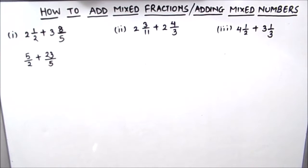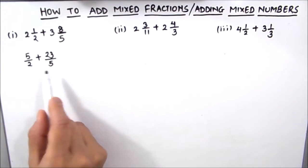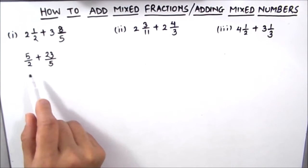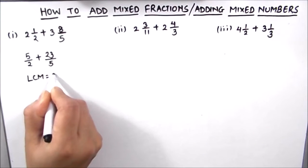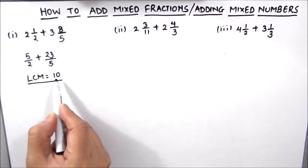We can directly add these two fractions by making the denominators of the two fractions equal. For that we are going to take the LCM of the two denominators. As both the numbers are prime numbers, the LCM will be 10.